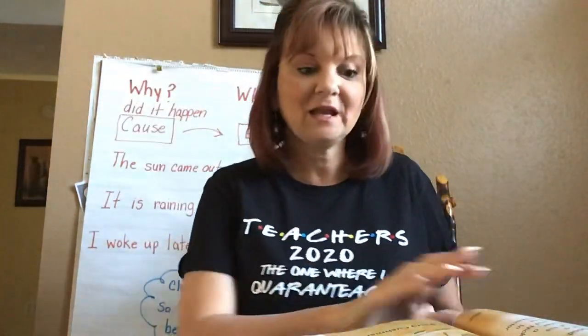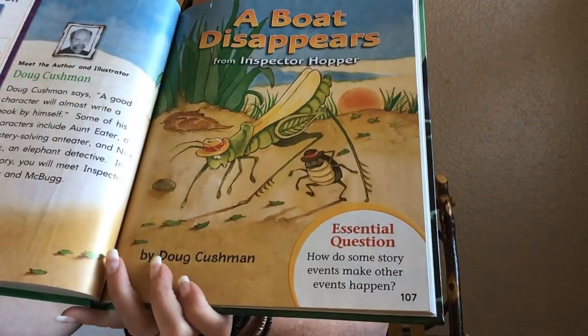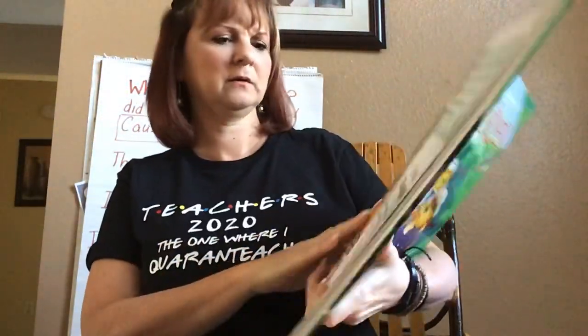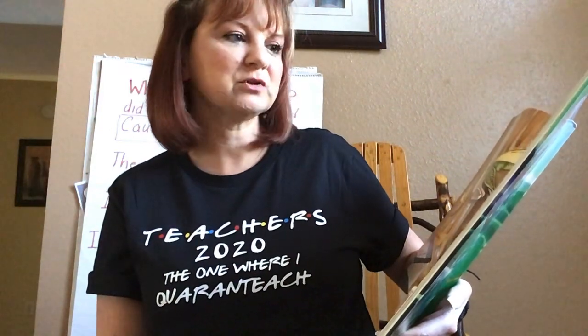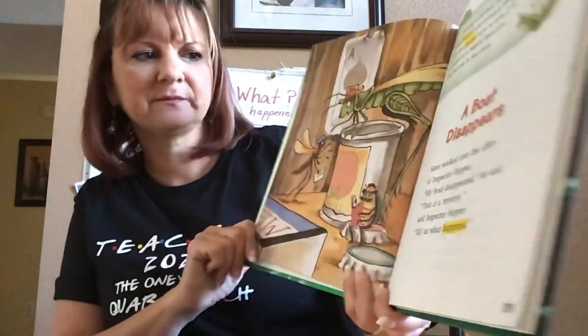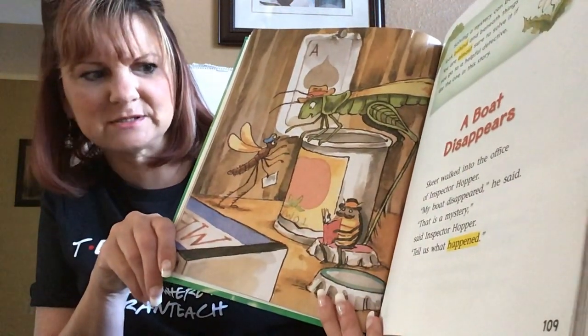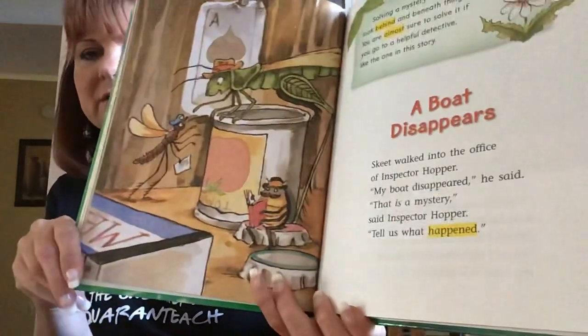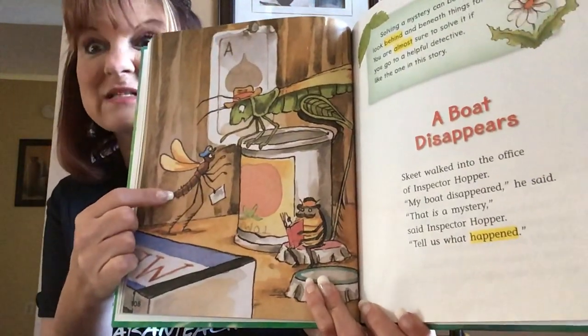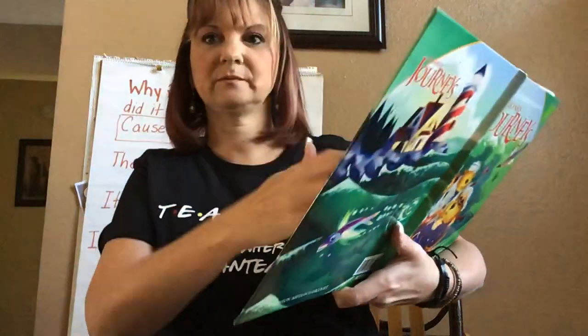So in our story, I might ask you to remember some of the details — what happened and why it happened. Cause and effect. Okay, so let's get started. Like I said, it's a mystery — ooh, I like mysteries! A Boat Disappears. There's Inspector Hopper and Mr. McBug. It says: solving a mystery can be very tricky. You may look behind and beneath things for clues. You are almost sure to solve it if you go to a helpful detective, like this one in the story. So a detective helps you solve a mystery. Skeet walked into the office of Inspector Hopper. 'My boat disappeared,' he said. 'That is a mystery,' said Inspector Hopper. 'Tell us what happened.' So that is the mystery — Skeet, who is a mosquito, lost his boat. These two detectives are gonna help him find his boat. That's the mystery: a missing boat.